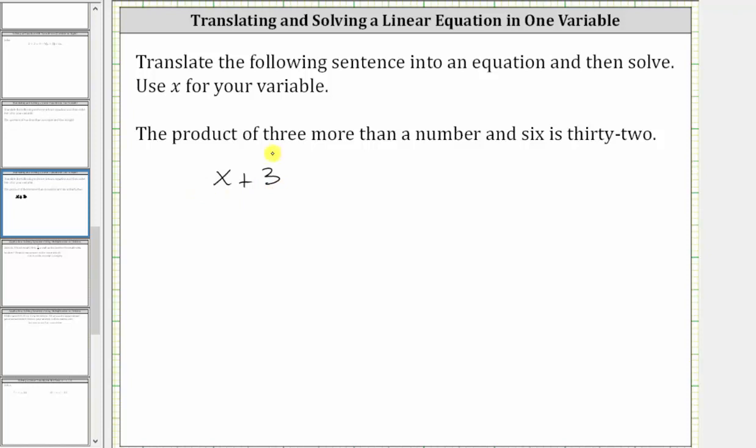Because we have the product of three more than a number and six, we have the quantity x plus three times six, or six times the quantity x plus three. And this is equal to 32.